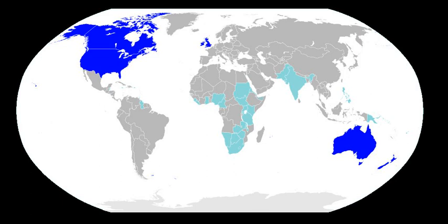The earliest form of English is called Old English or Anglo-Saxon. Old English developed from a set of North Sea Germanic dialects originally spoken along the coasts of Frisia, Lower Saxony, Jutland, and Southern Sweden by Germanic tribes known as the Angles, Saxons, and Jutes. In the 5th century, the Anglo-Saxons settled Britain as the Roman economy and administration collapsed. By the 7th century, the Germanic language of the Anglo-Saxons became dominant in Britain, replacing the languages of Roman Britain — Common Brittonic, a Celtic language, and Latin brought to Britain by the Roman occupation.